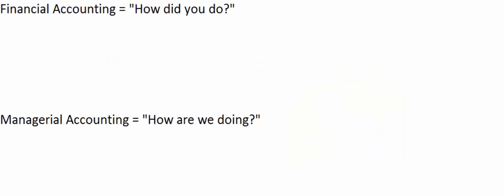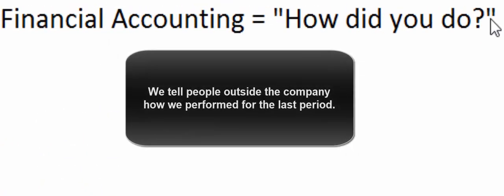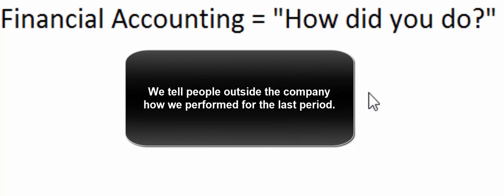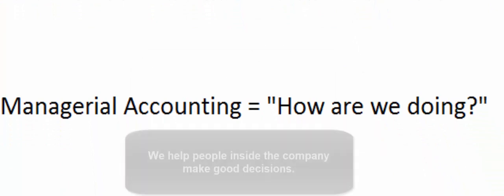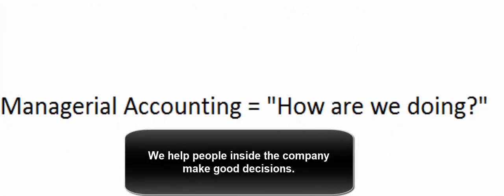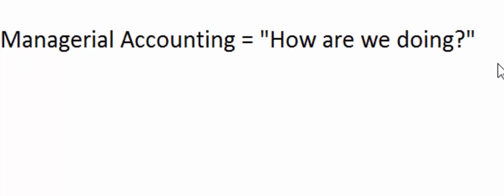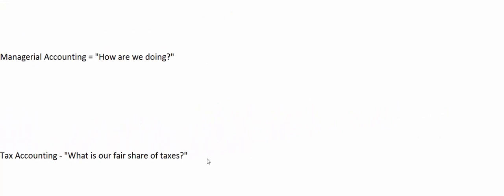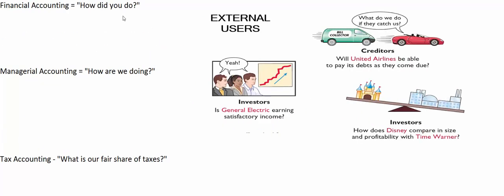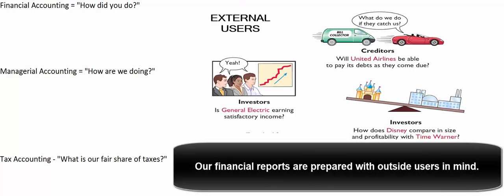There are three basic kinds of accounting. Financial accounting answers the question: how did you do? We tell people outside the company how we did last month, last quarter, last year. Managerial accounting is about how are we doing — we help management make good decisions about running the business in real time. And tax accounting is about what is our fair share of taxes. We're going to begin with financial accounting, answering the question: how did you do? Outsiders want to know if we're earning a satisfactory amount of net income, how we compare with other companies, and whether we'll be able to pay our debts as they come due.